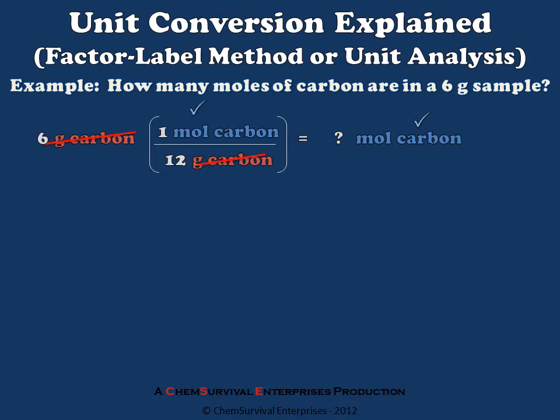Proceeding with the math as setup, notice that one mole of carbon being 12 grams and 6 grams being my starting point leads me to the conclusion that 0.5 moles of carbon are present in the sample. This is the value of factor label method. It gives us a simple internal check for our math.